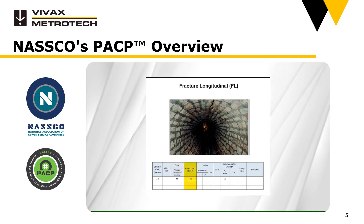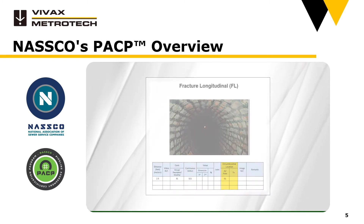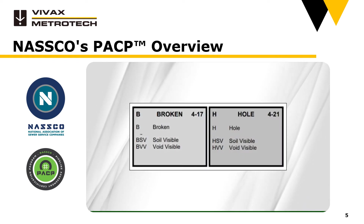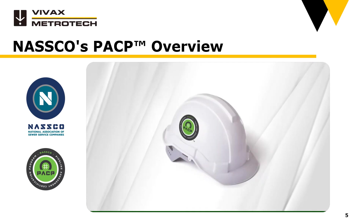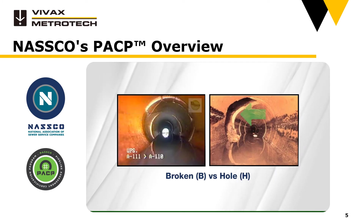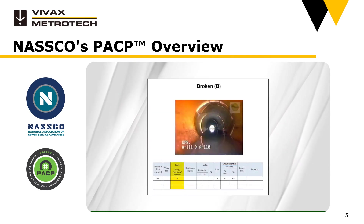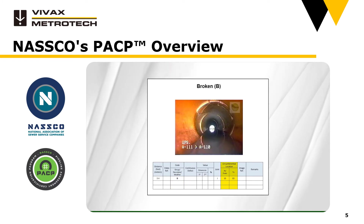It's marked as continuous because it extends for a specified distance and is located at one o'clock. Next up, broken or whole. The distinction between the two is very significant, which is why it is important that a certified PACP professional is coding. Broken, or the letter B, is used when pieces are noticeably displaced, while whole, or the letter H, is used when the pipe material is clearly missing. In this example, the pipe is broken at a joint from 10 to 3. Note that pieces of the pipe are displaced from their original position.